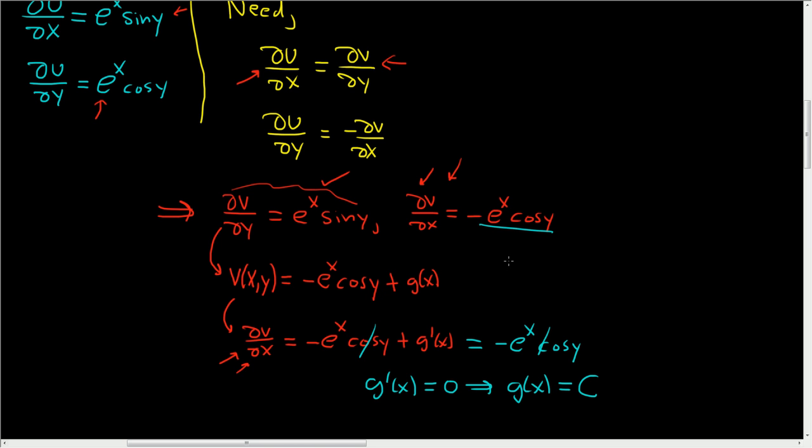The final answer is v of x, y equals minus e to the x cosine y plus our constant c. That is the harmonic conjugate of u.